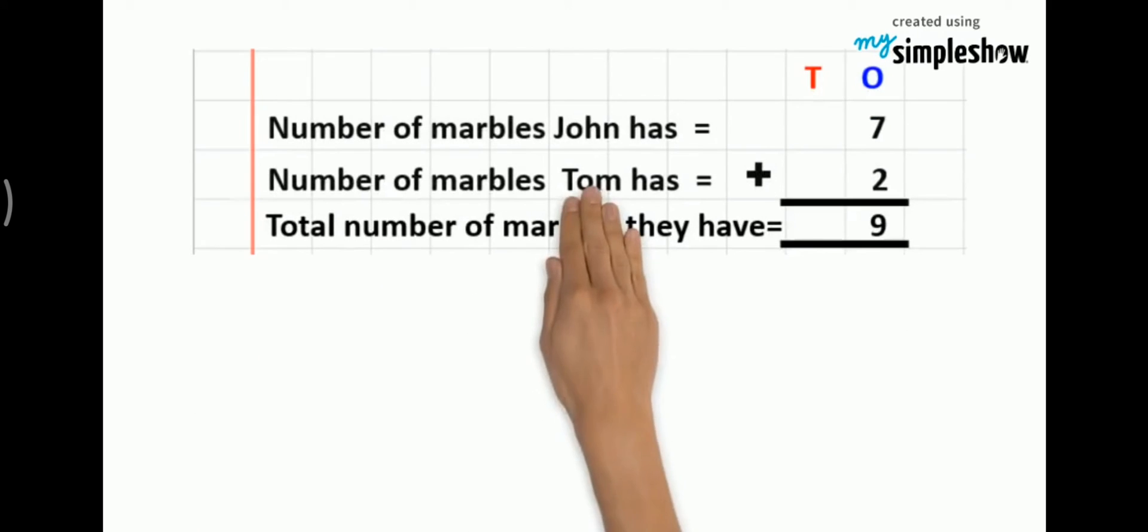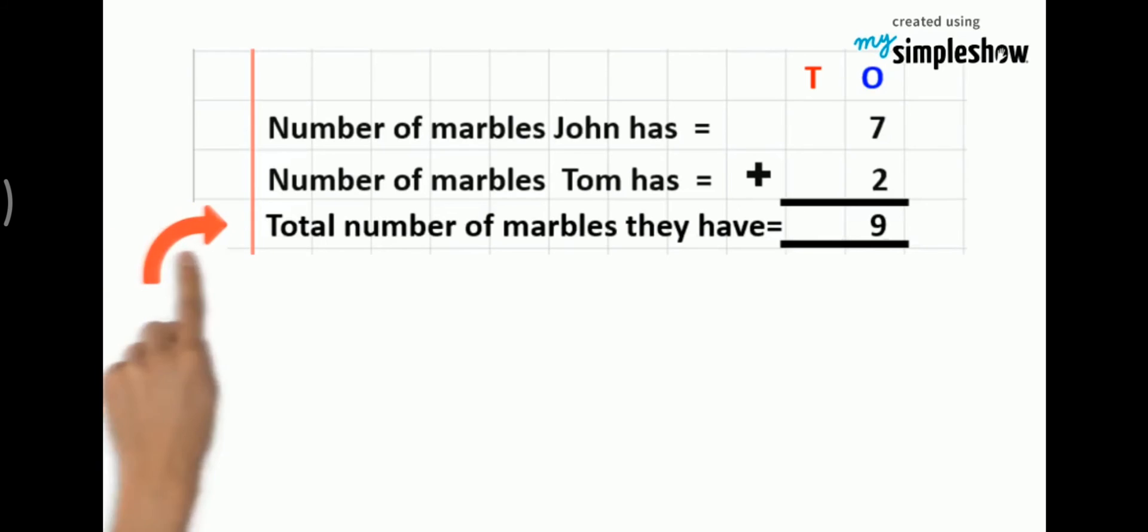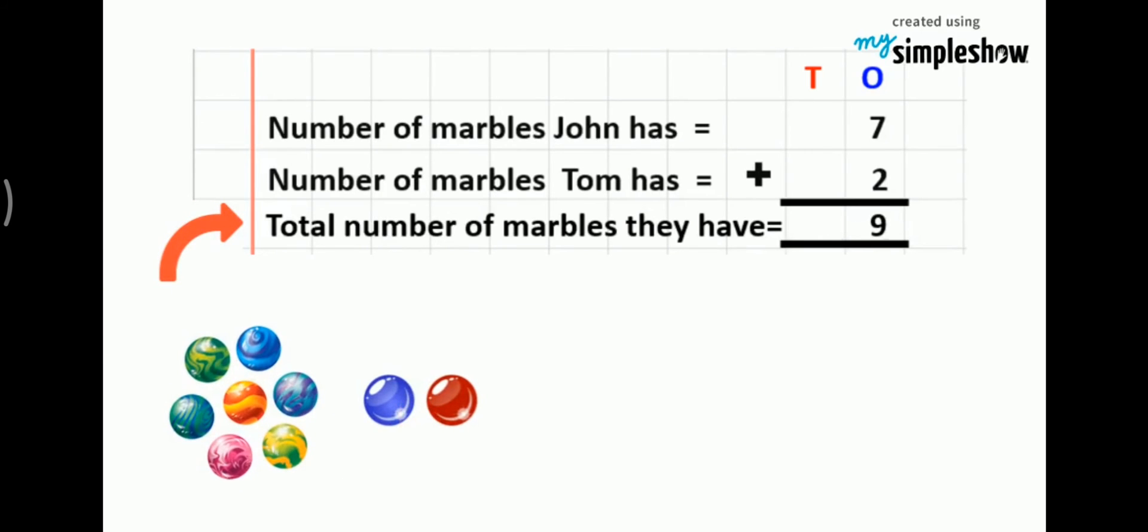The second statement will be: number of marbles Tom has equals 2. And the final statement will be: total number of marbles they have is 9. That is the sum you get after adding 7 and 2.